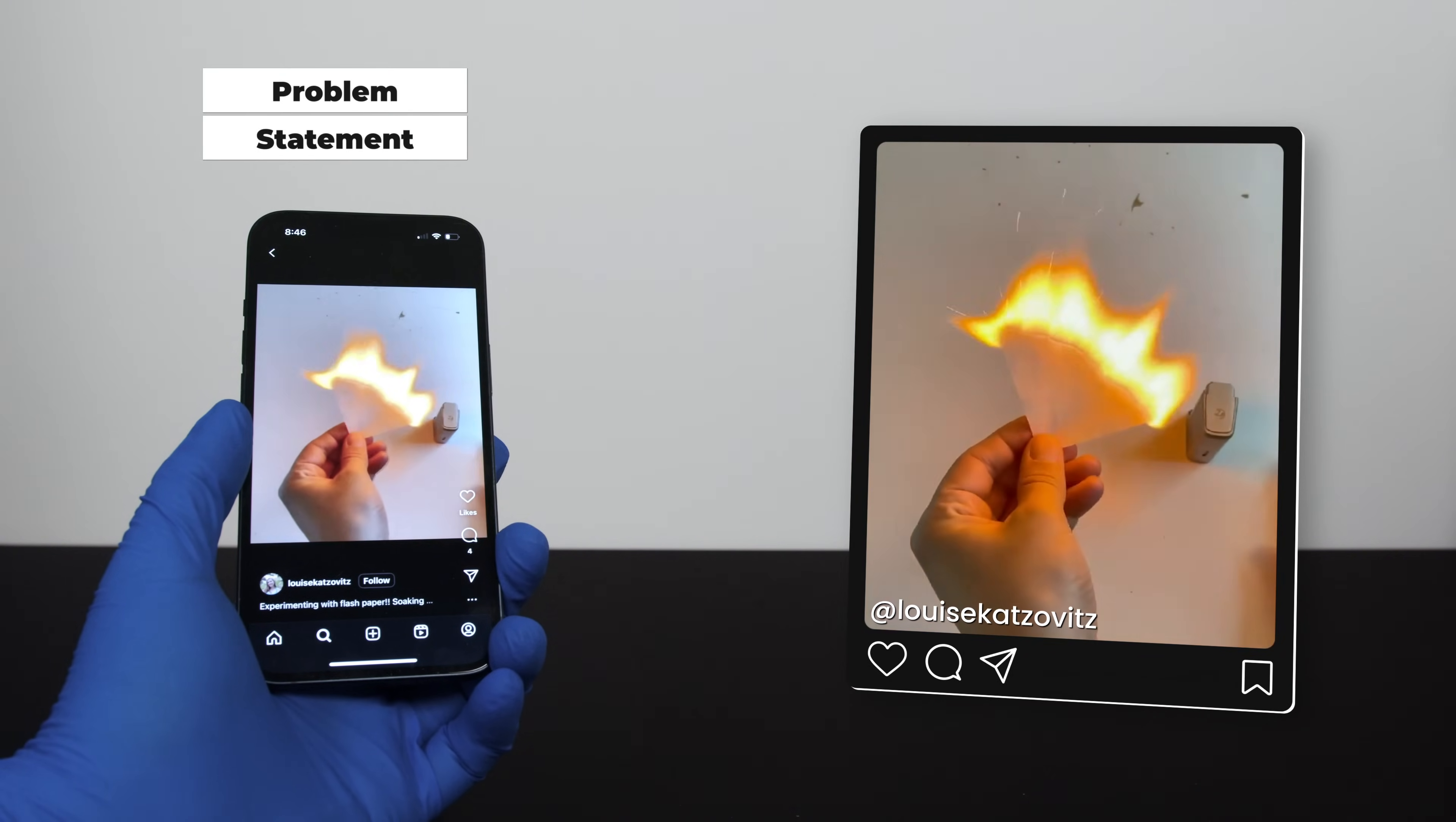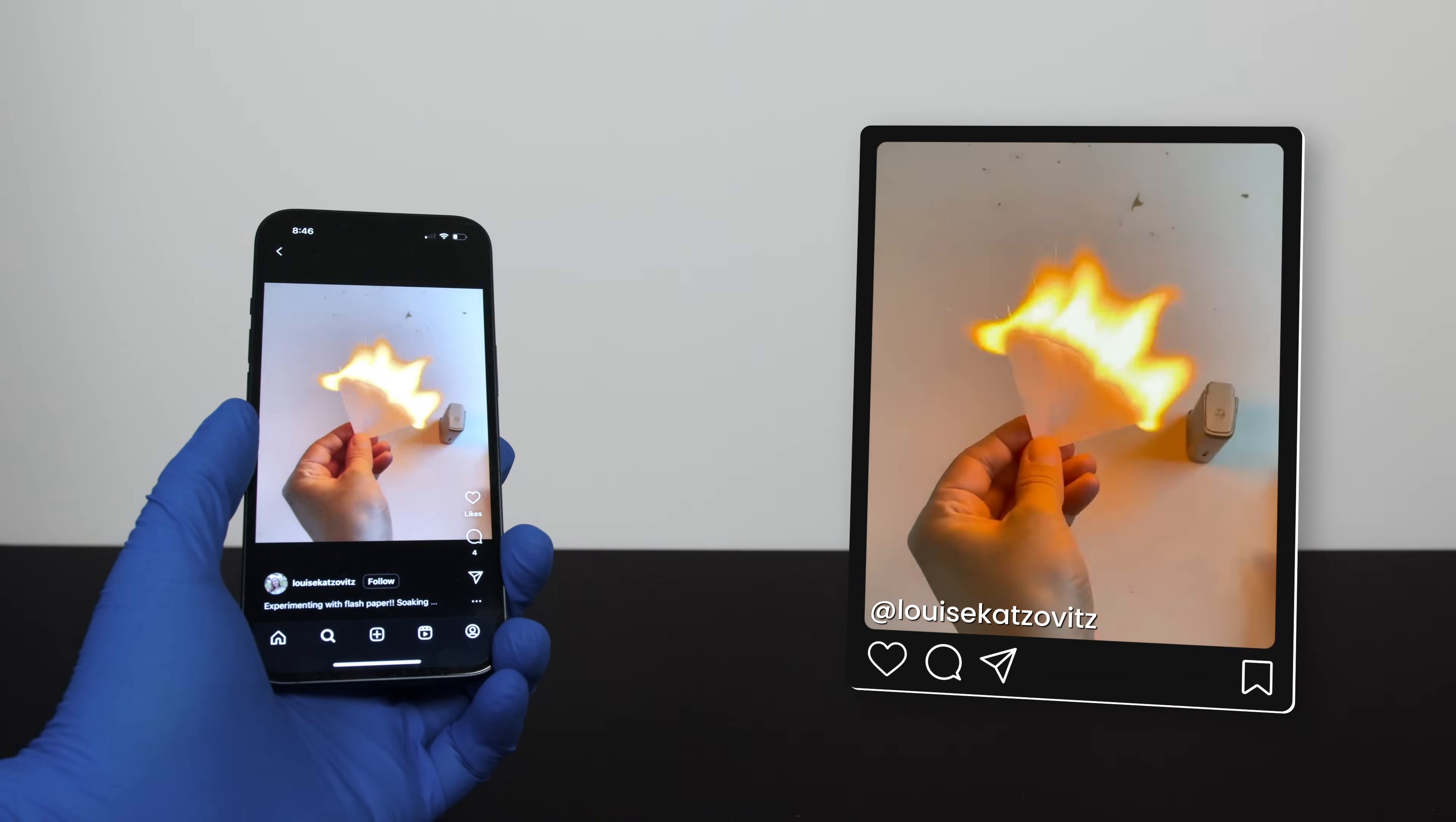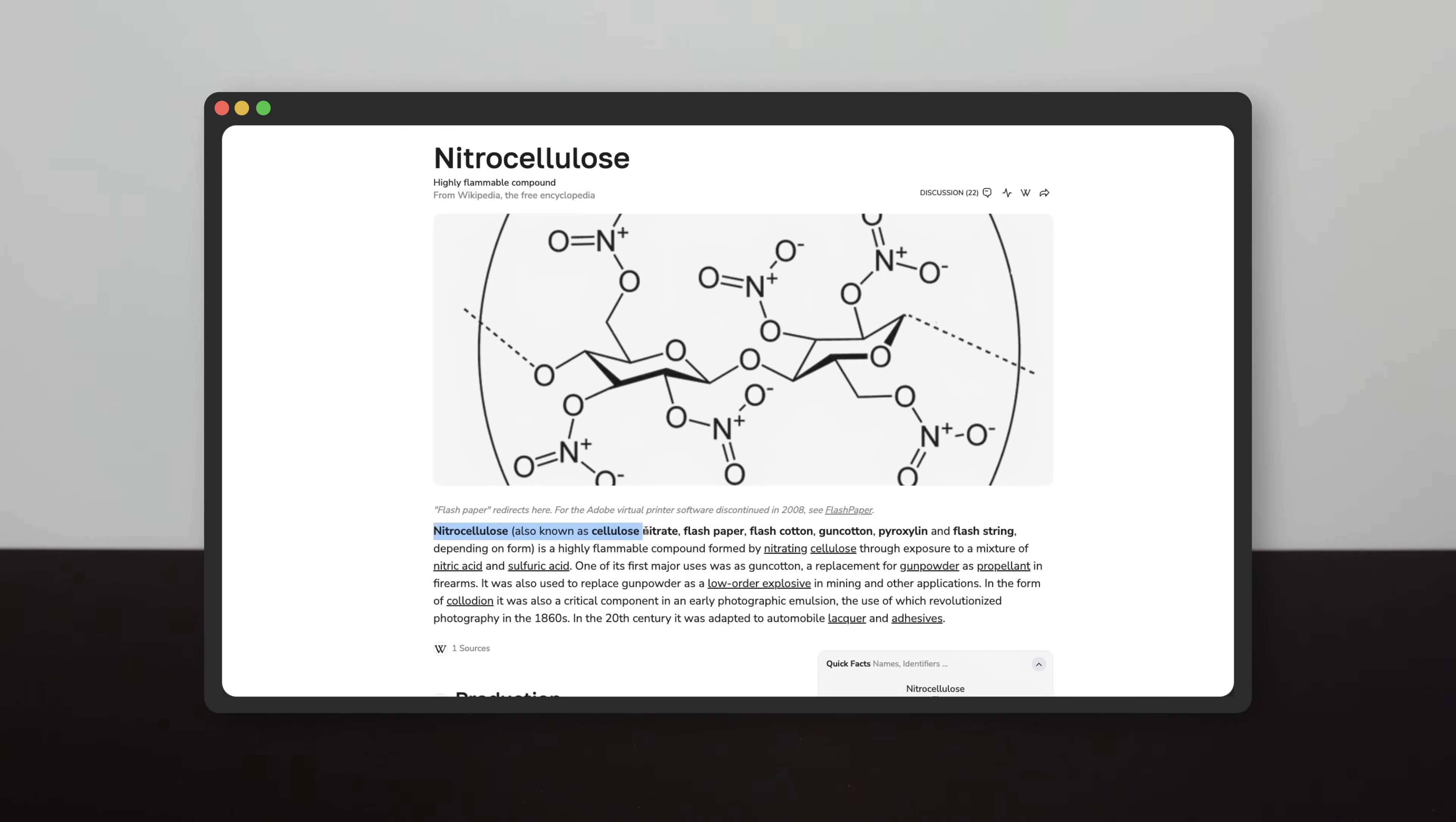The other day when I was doomscrolling on my phone, I came across a video of people playing with flash paper. When I looked it up, the chemistry behind nitrocellulose, which is the actual name for flash paper, it is basically just a nitrated version of cotton.